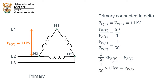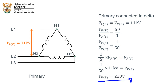I know the primary phase voltage is 11 kilovolts, so I can solve this equation. The phase voltage on the secondary side equals 11,000 divided by 50, which equals 220 volts. That is the single phase voltage that will be supplied to customers.